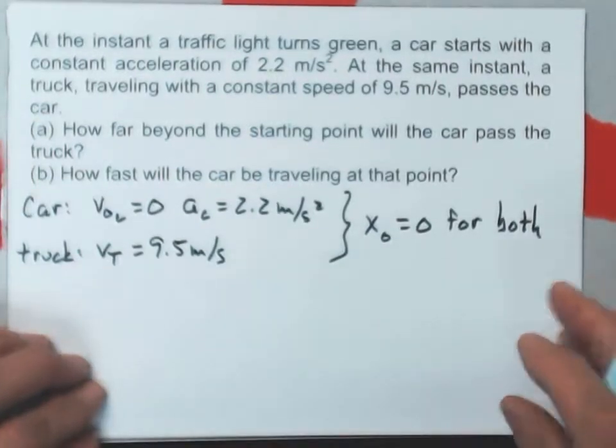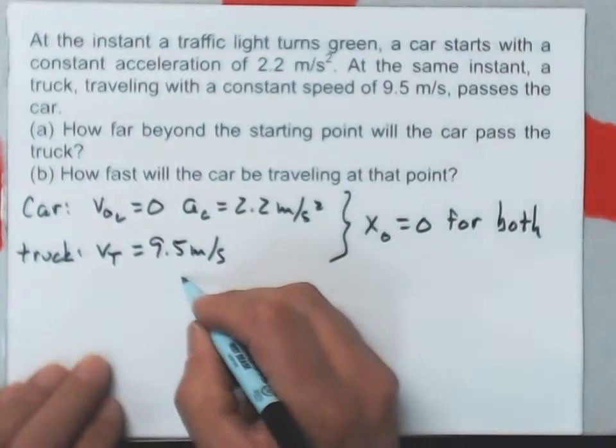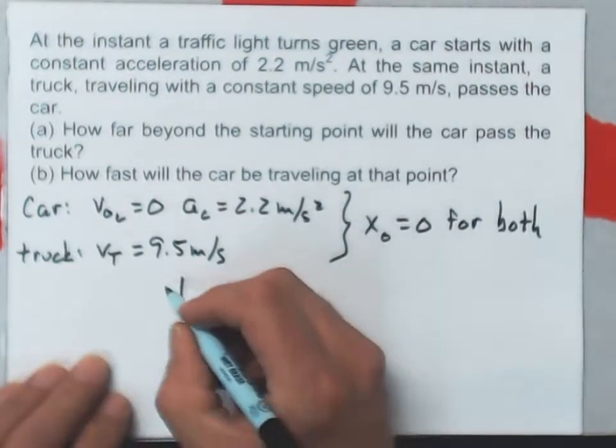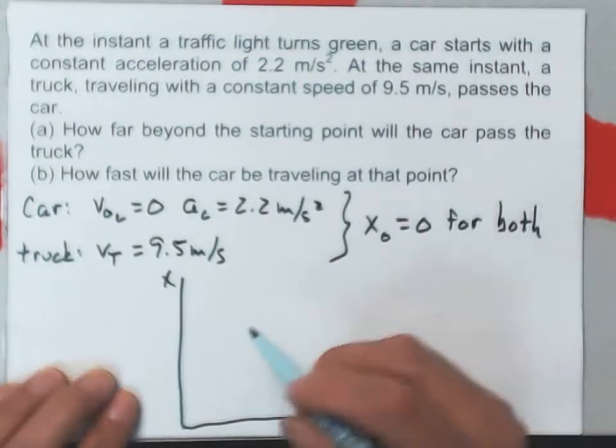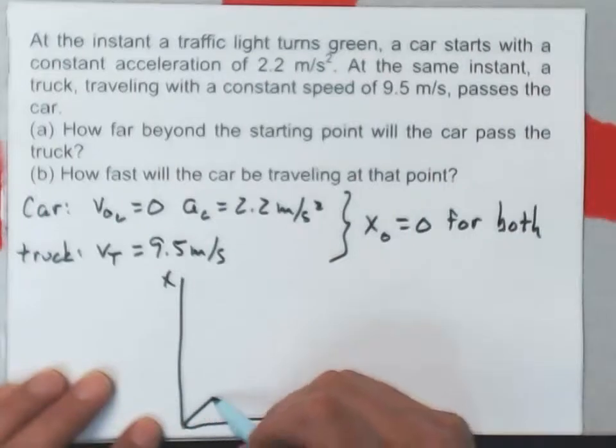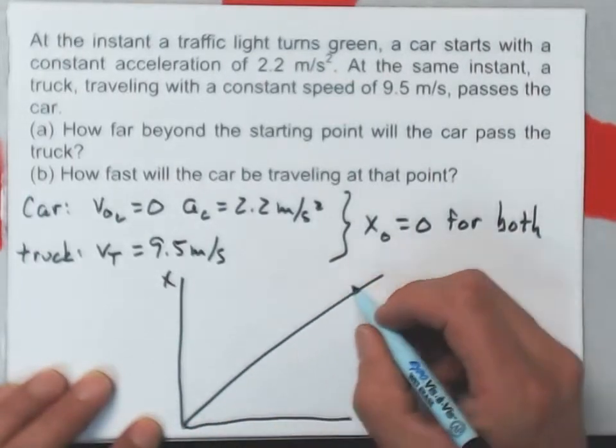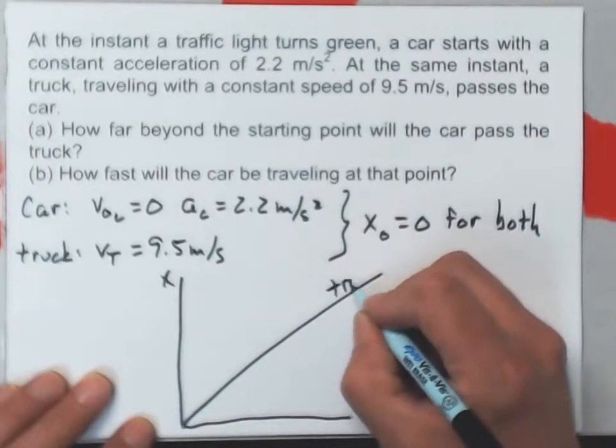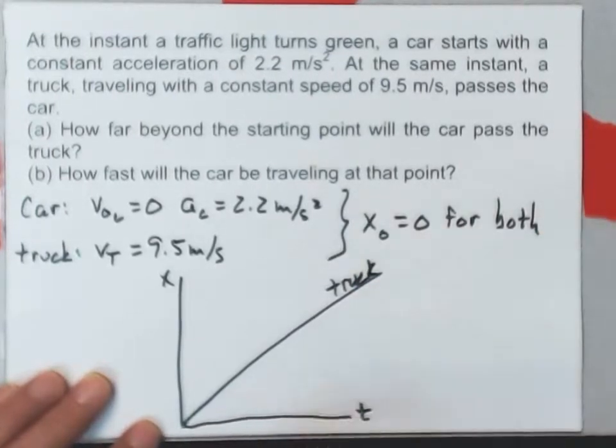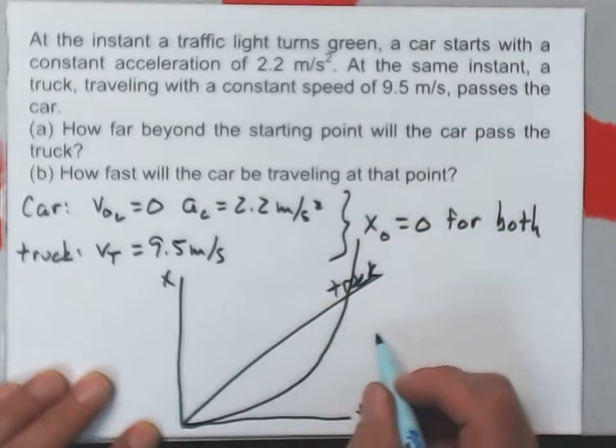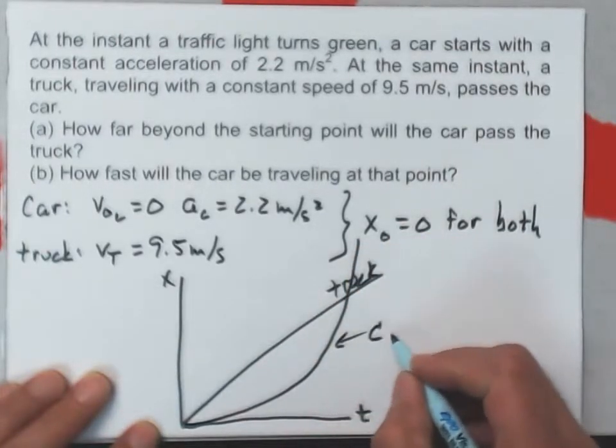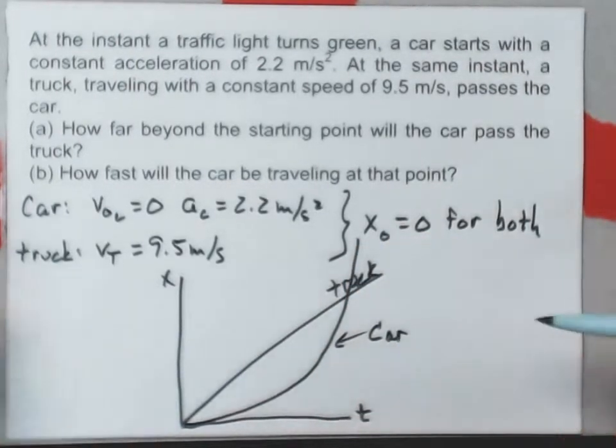Now this is one, it's nice to look at a graph of the motion here. If I have an X versus T curve here, the truck goes at constant velocity the whole time. So the slope of its graph is a straight line. The car starts from rest. So it has a horizontal curve to begin with, but it accelerates. So it's a curve. And that's what the car does. It's actually a parabola is what it is.